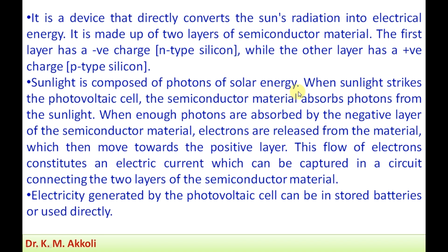When sunlight strikes the photovoltaic cell, the semiconductor material absorbs photons from the sunlight. When the negatively charged semiconductor material absorbs enough photons, electrons are released from the material, which then move towards the positive layer. This flow of electrons constitutes an electric current, which can be captured in the circuit connecting the two layers of the semiconductor material. Electricity then flows from the negatively charged layer to the positively charged layer.